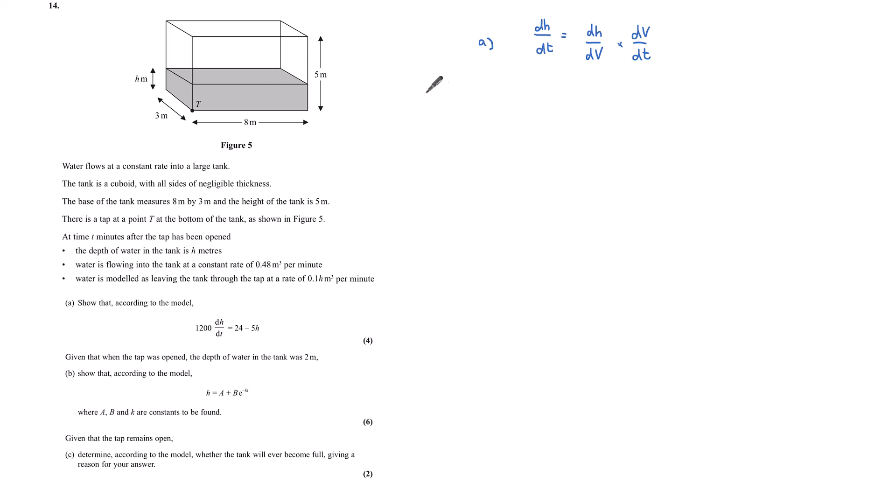This is going to be a product of the change in height with respect to the volume of water in this tank and then the volume of water in this tank with respect to time. Here I'm letting v equal the volume of water. My chain rule states dh by dt can be written as dh by dv times dv by dt.